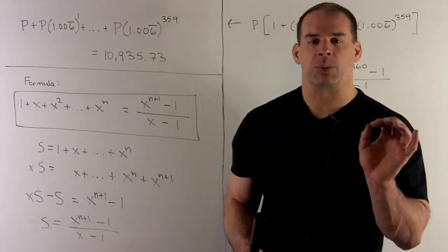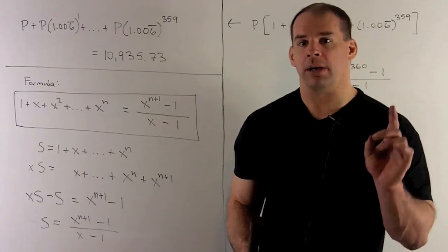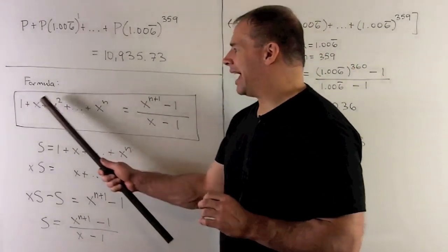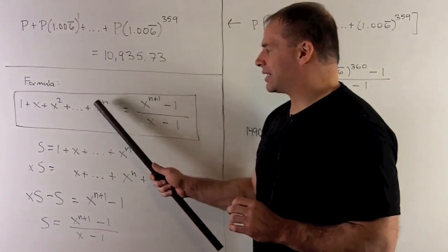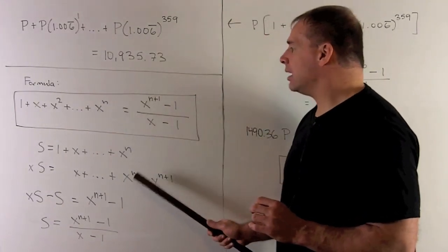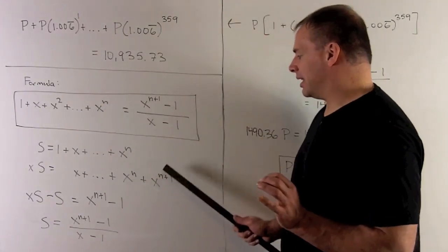So it's just going to raise the exponent of each x by a 1. So 1 will go to x, x will go to x squared, x to the n minus 1 goes to x to the n, x to the n goes to x to the n plus 1.